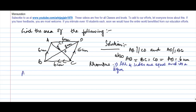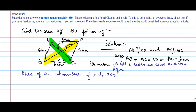We know the area of a rhombus is equal to half into D1 into D2. So what are the diagonals that we have here? One is BD and the other one is AC. So the area is half into AC into BD.